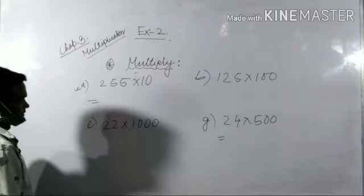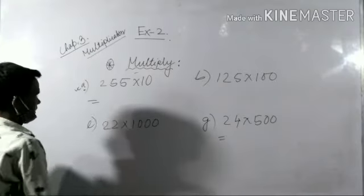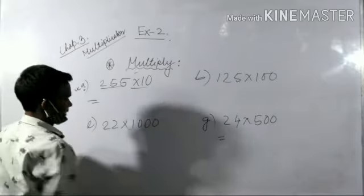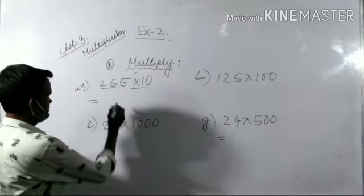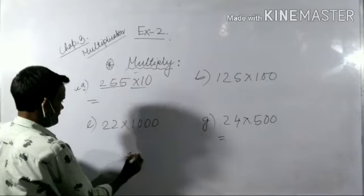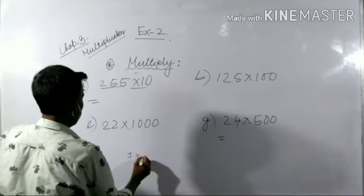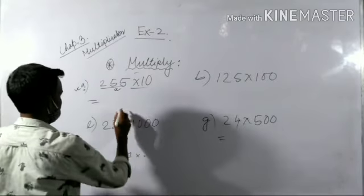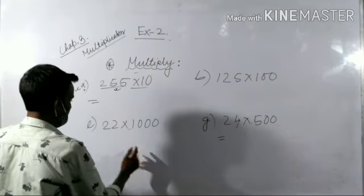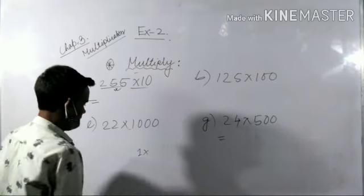First of all, what is given? 255 multiplied by 10. So what will you do? Simply, if you multiply any number with one, the number will remain the same. When you multiply by 10, one zero will be added to the number.